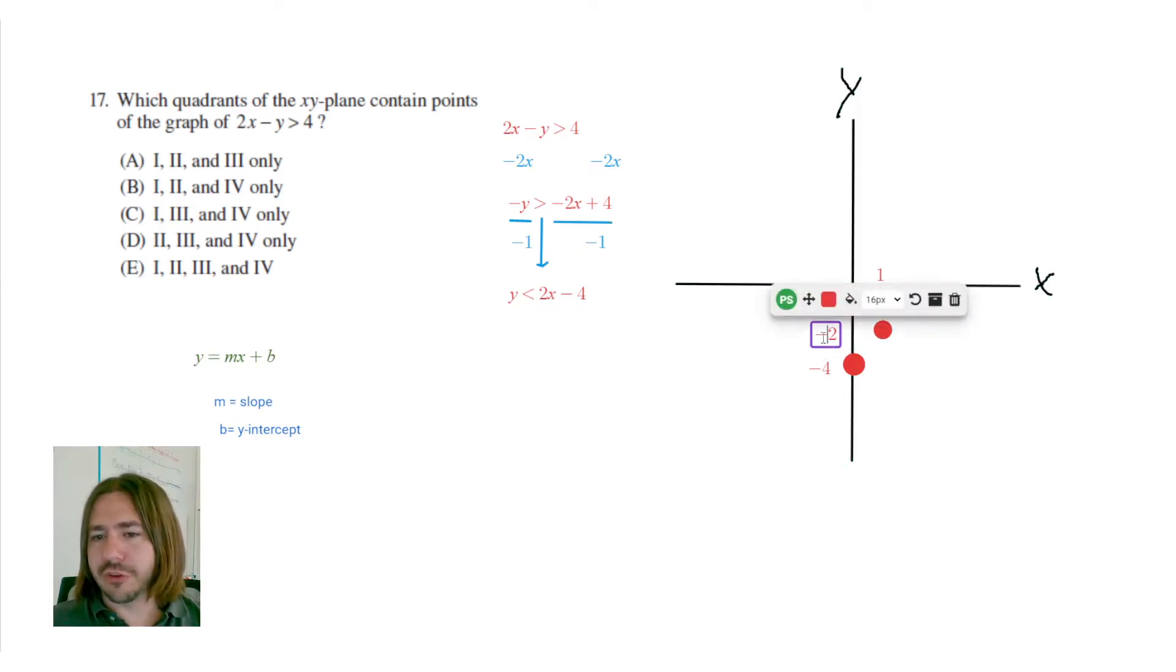Again, this is just a really rough sketch, but it's going to be good enough to allow us to answer the question. I can keep going here by using the slope, going up 2 over 1. That's going to give me my x-intercept there, which happens to be at 2. And then I can go up 2 over 1, get one last point here, and that's probably good enough to be able to see where the line is going to be.